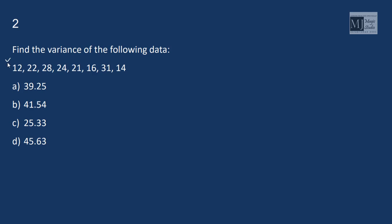Find the variance of the following data. We know that formula for variance is summation X minus X bar whole square by N. We need X bar that is summation of X by N. Summation of X means total of these all and the total is 168 by 8 that is 21.